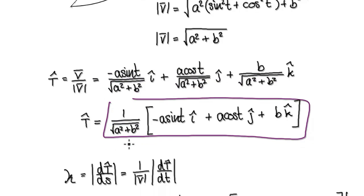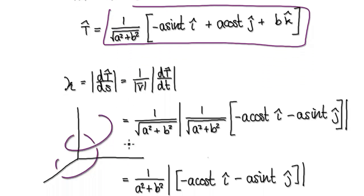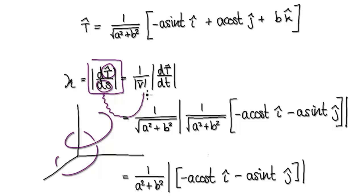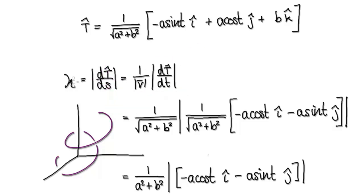Remember, to work out curvature, curvature is defined as the derivative of the unit tangent with respect to arc length. But we don't really understand what it means to differentiate the unit tangent with respect to arc length, so we use algebra to convert it. We make use of this working formula instead: differentiate the unit tangent with respect to time, find its magnitude, and divide by the magnitude of v.